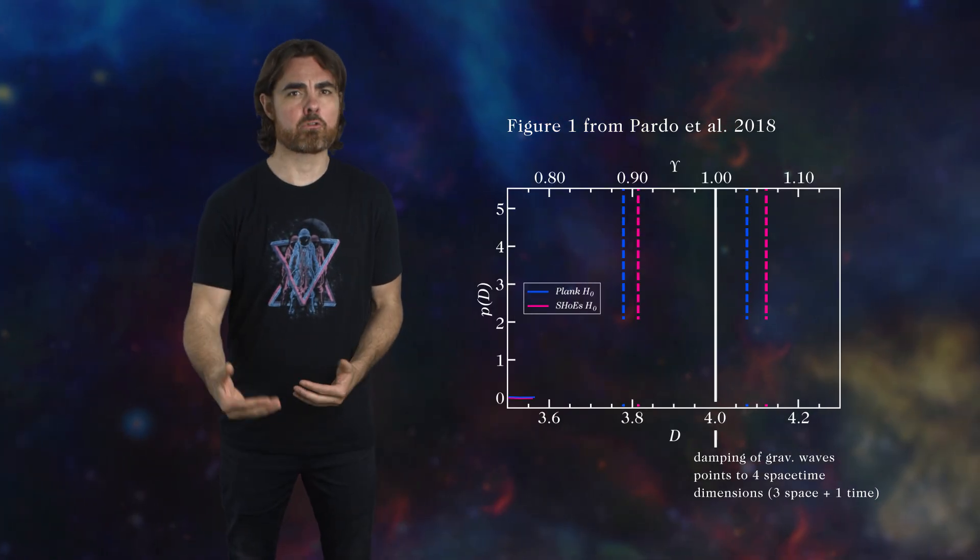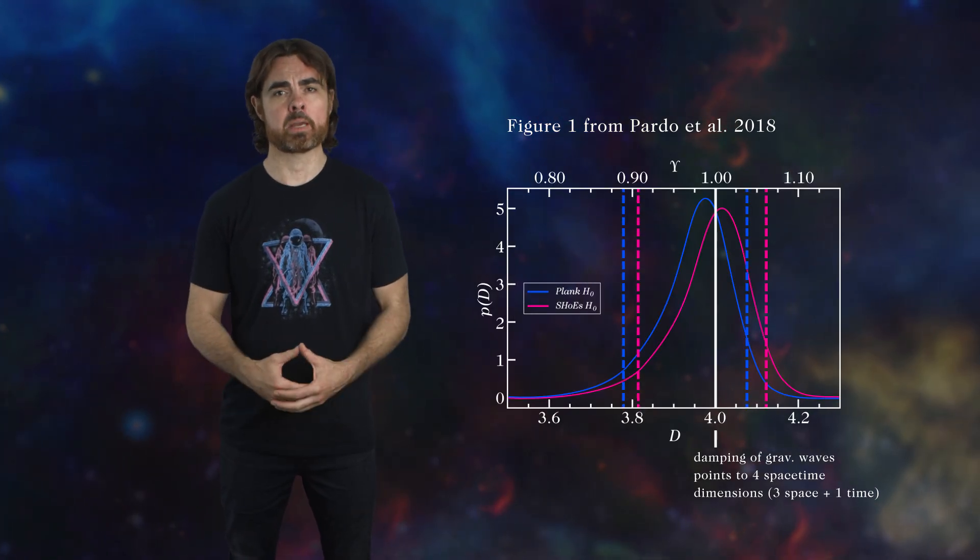Okay, so what's our conclusion? How many extra dimensions did we discover? Zero. Precisely zero. The gravitational wave lost the right amount of intensity for a 3 plus 1 dimensional spacetime. There was no observable leakage of gravity into extra spatial dimensions, pretty much ruling this out as an explanation for dark energy.